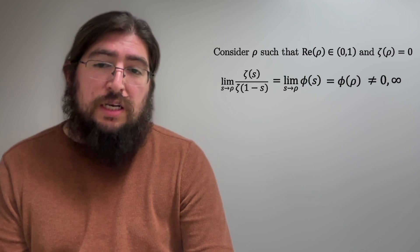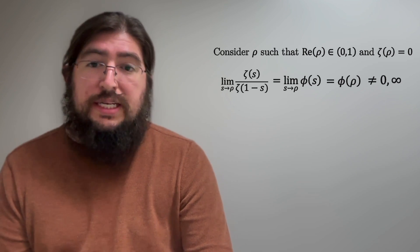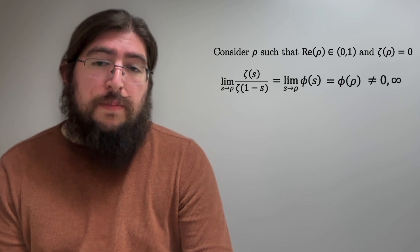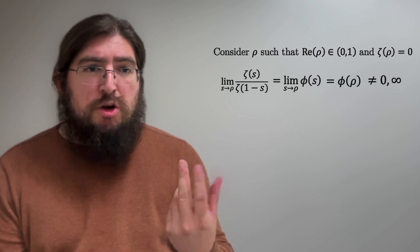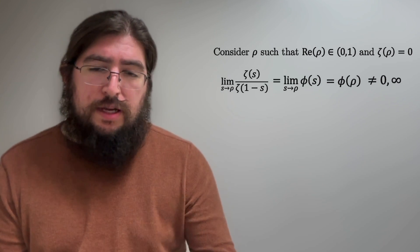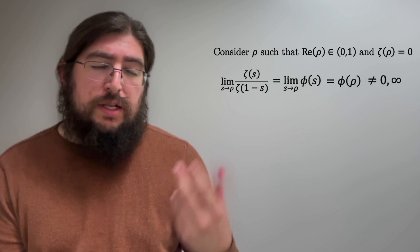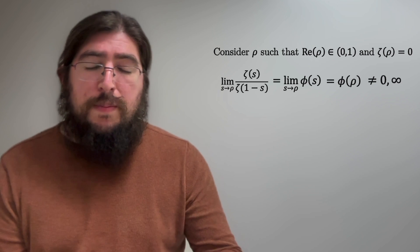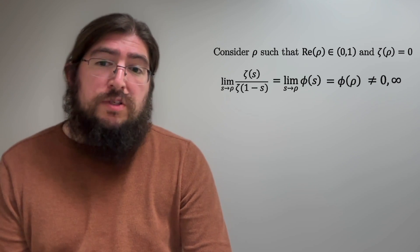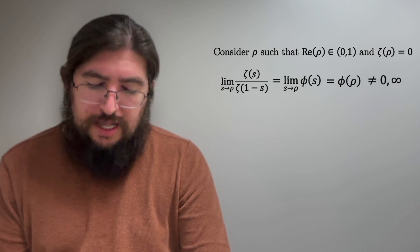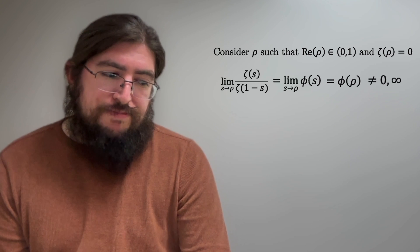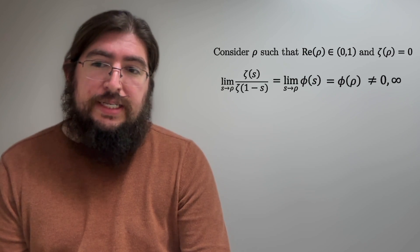So it ends up being true that this limit of zeta of s over zeta of 1 minus s is actually a valid number. It's funny, because it's an indeterminate form, right? 0 over 0, because rho is a zero, so if you plug it in directly, you get zeta of rho over zeta of 1 minus rho, which those are actually both zeros of zeta, but, yeah, as it turns out, this limit actually exists, believe it or not.